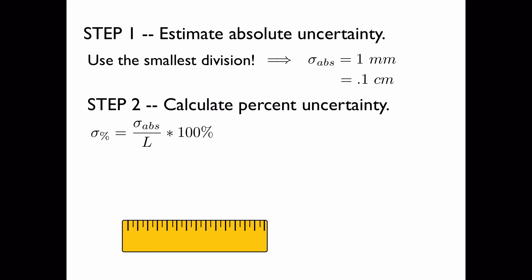This is given by the ratio of the absolute uncertainty to the measurement at hand times 100% to make it a percent. Here L equals 15, and so both the absolute uncertainty and the measurement need to be in the same units in order to get a correct value for the percent uncertainty. In this case it turns out to be 0.7%.